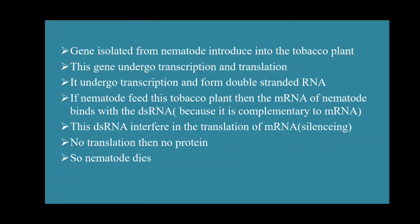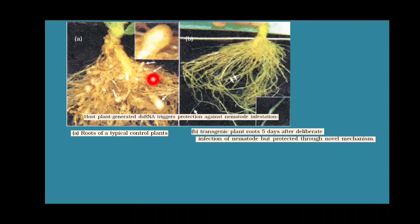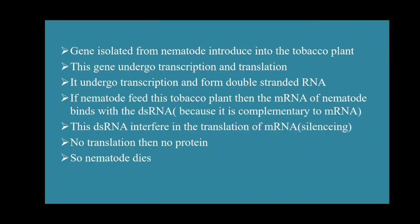Here you can see two images. The first image shows the root of a typical control plant, and the second shows a transgenic plant root five days after deliberate infection with nematode, but protected through this novel mechanism. Through this mechanism we can easily increase the yield of our plant.